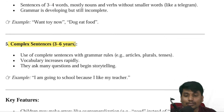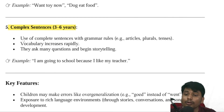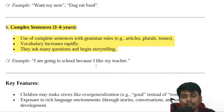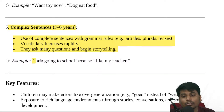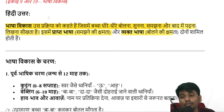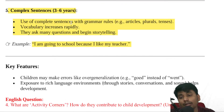Complex sentences stage: three to six years, preschool age. This is a full grammatical sentence. For example: 'I am going to school because I like my teacher.' It is a complete, direct sentence. Language development stages — option.